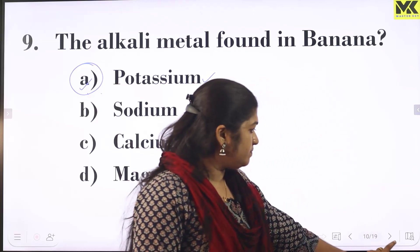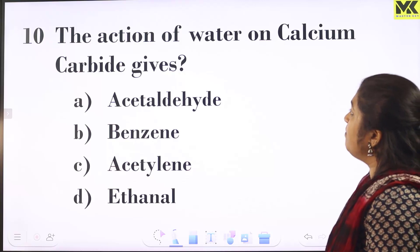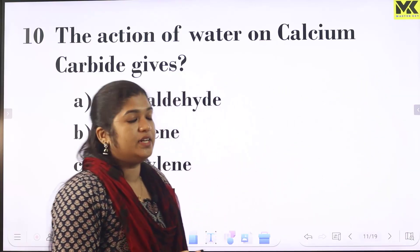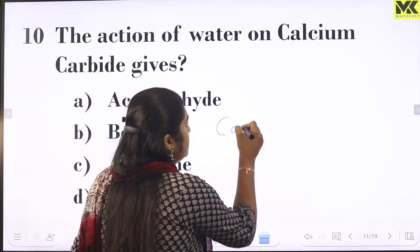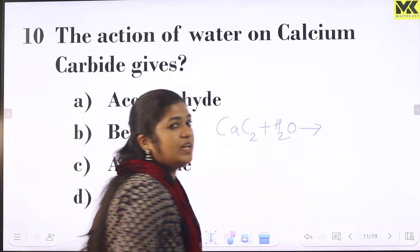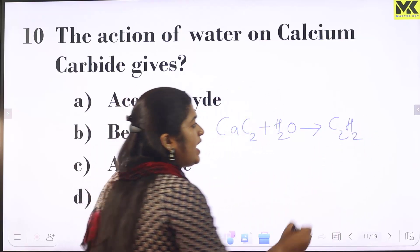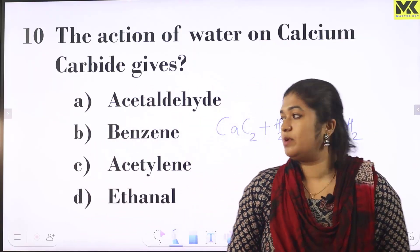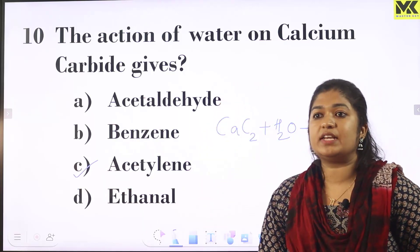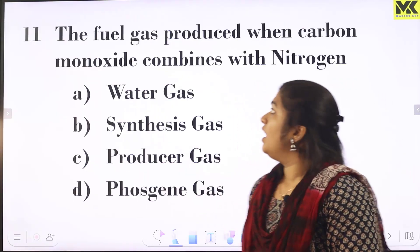The action of water on calcium carbide: calcium carbide is CaC2. When calcium carbide reacts with water (CaC2 + H2O), the product is C2H2, which is called acetylene. So calcium carbide reacting with water gives acetylene.